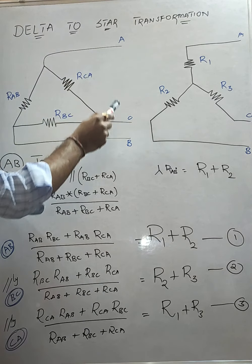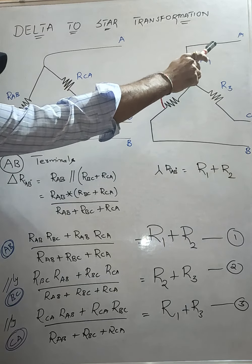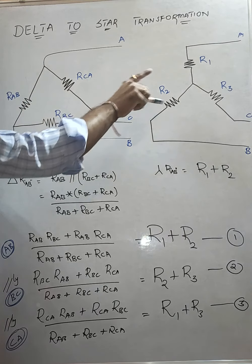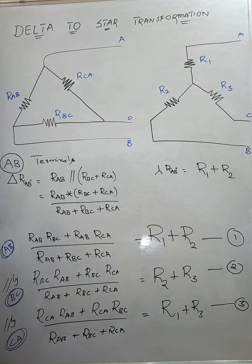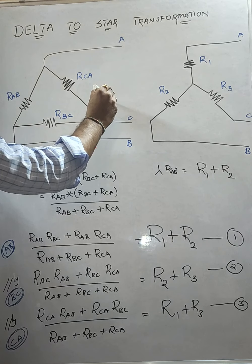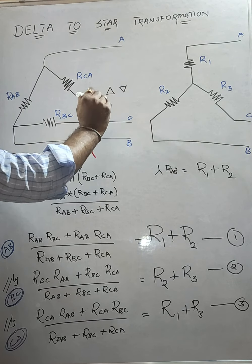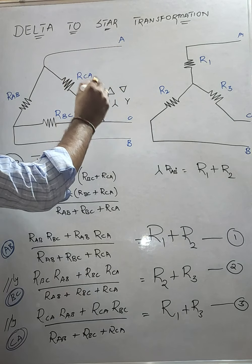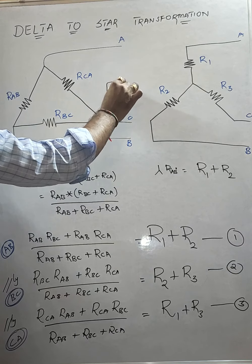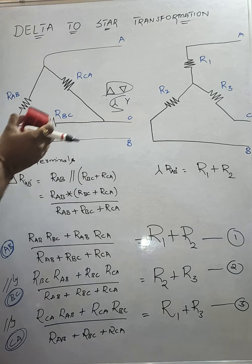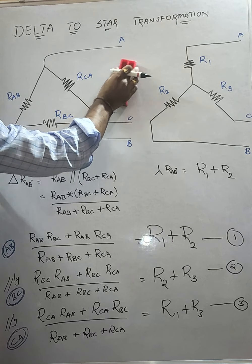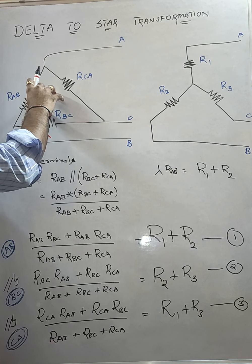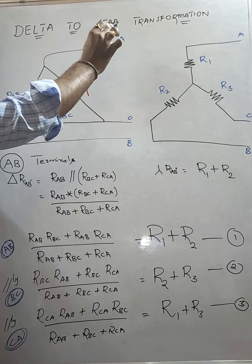Let the terminals be A, B, C — same locations A, B, C. I would like to convert this shape to that shape. This shape resembles a triangular shape, maybe an inverted triangle. Another one is Y or inverted Y. This shape is nothing but star and this shape is nothing but delta. Remember the names: star connection, delta connection. In the first derivation, I would like to go for delta shape to star — that is delta to star transformation.